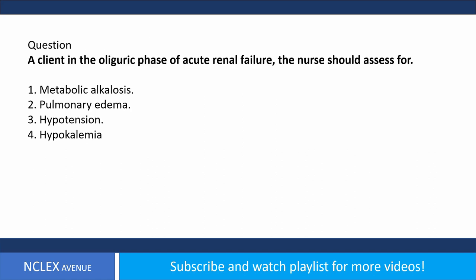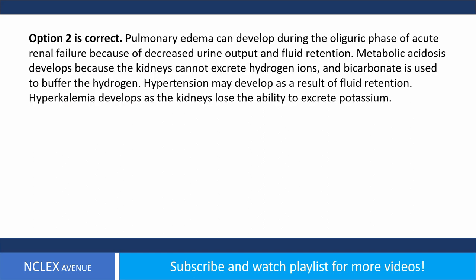Question. A client in the oliguric phase of acute renal failure — the nurse should assess for: 1. Metabolic alkalosis. 2. Pulmonary edema. 3. Hypotension. 4. Hypokalemia. Answer. Option 2 is correct. Pulmonary edema can develop during the oliguric phase because of decreased urine output and fluid retention. Metabolic acidosis develops because the kidneys cannot excrete hydrogen ions. Hypertension may develop due to fluid retention, and hyperkalemia develops as the kidneys lose the ability to excrete potassium.